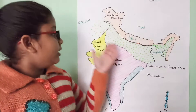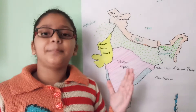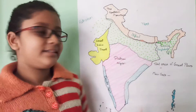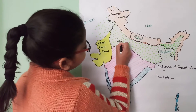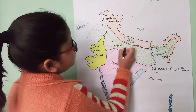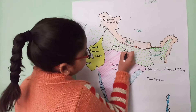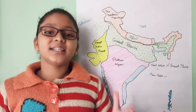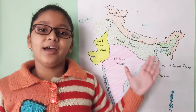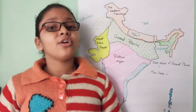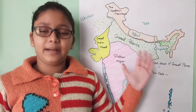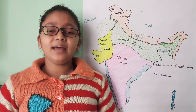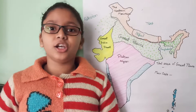So now, this is the Indo-Gangetic Plains, or the Great Plains. We will discuss about the Indo-Gangetic Plains, one of the physical regions. As we know, the Indo-Gangetic Plains are large alluvial soil plains which encompass an area of 7 lakh kilometers squared.